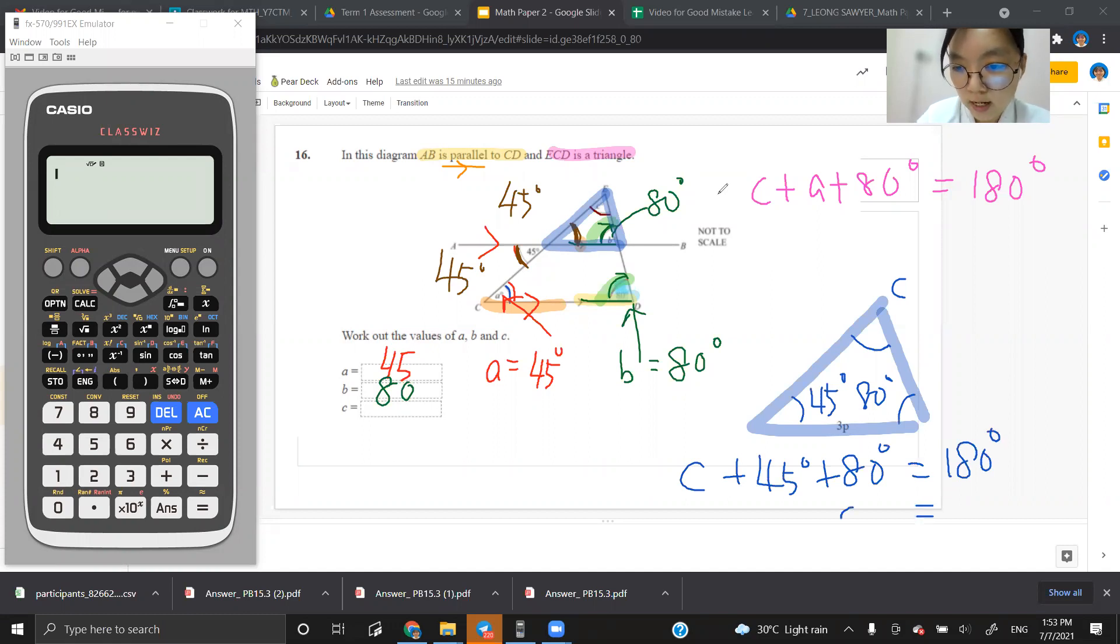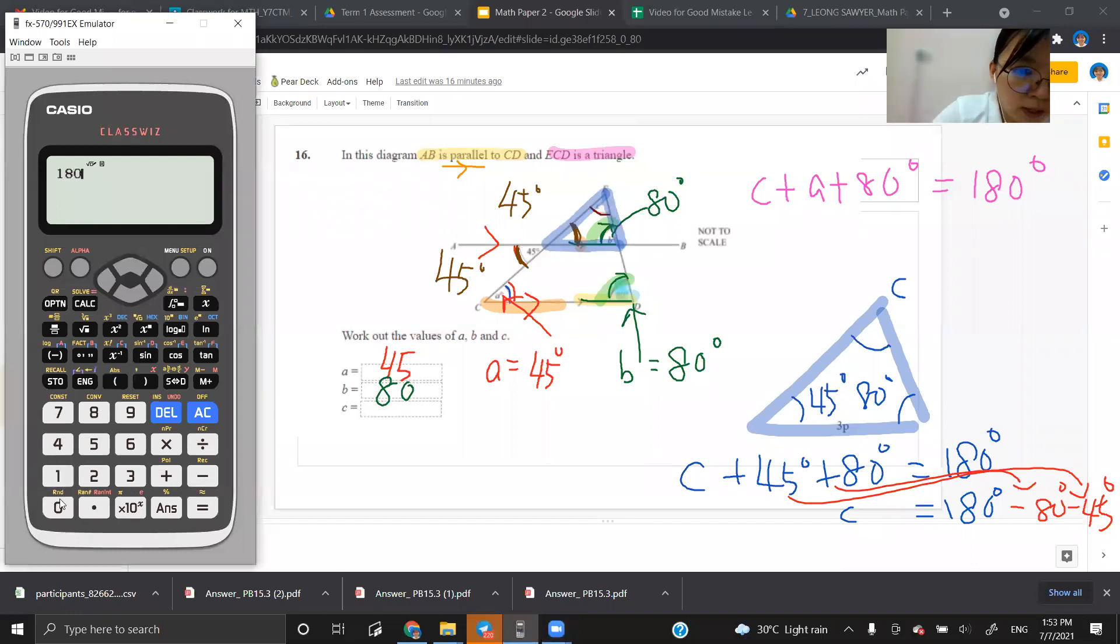To find my C, I shift all my numbers to the right. I have plus, shifting to the right become minus, and this one shifting to the right become minus 45 degrees. Put into the calculator, 180 minus 80 minus 45. I'm getting a number of 55 here, which is my angle C.